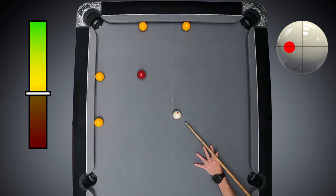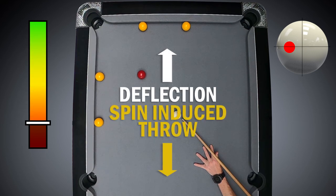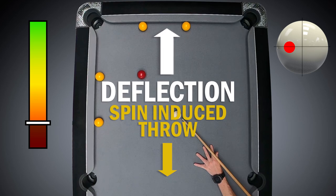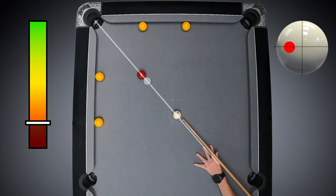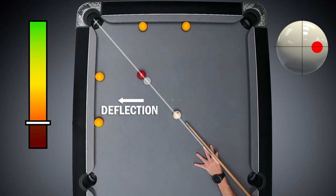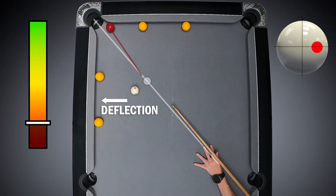When we play the shot firmly it has opposing effects on deflection and spin-induced throw. The firm pace increases the deflection but reduces the spin-induced throw. If we look at this example of lots of right-hand side played firmly, you can clearly see the cue ball being deflected out to the left. However, the spin-induced throw at this fast pace is so minimal it's not enough to straighten the object ball and we end up missing the shot to the right of the pocket.